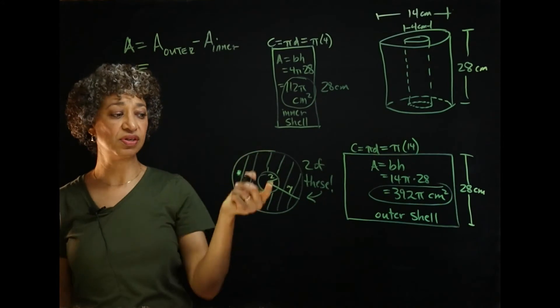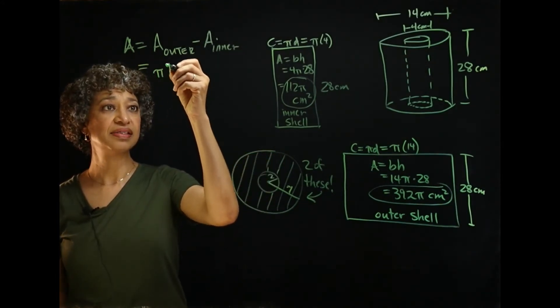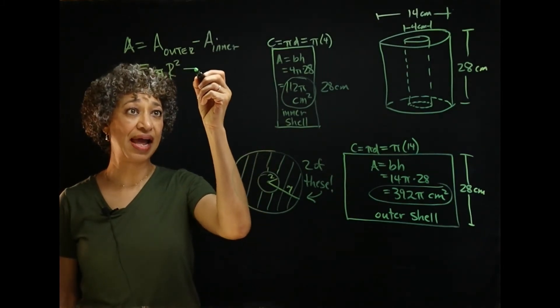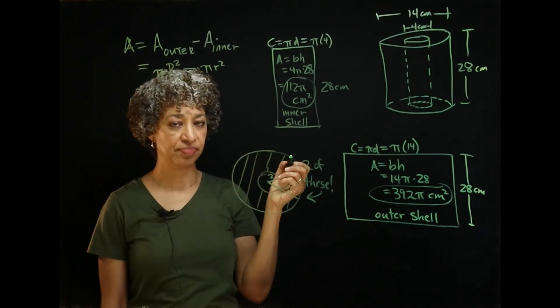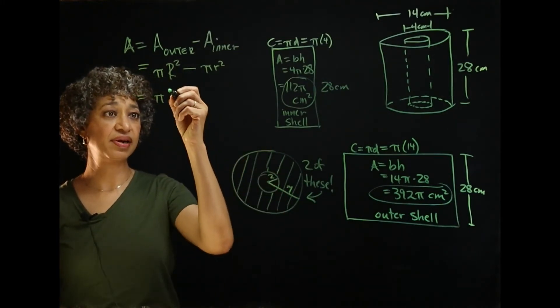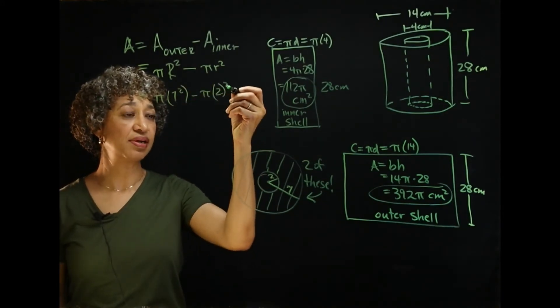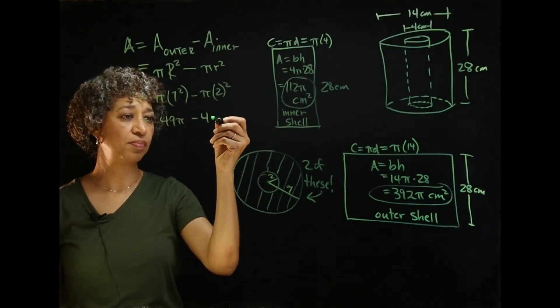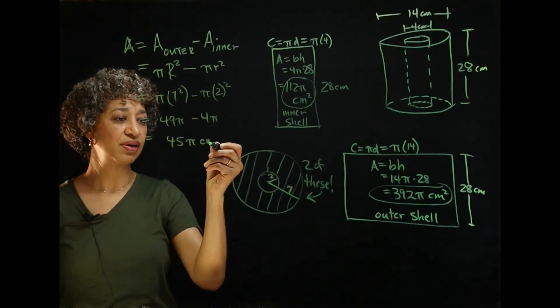So, they're both circles. So, the area of our big circle is pi times big R squared. Pi times the big radius squared. And we need to subtract pi times the little radius squared. So, then, that is pi times 7 squared minus pi times 2 squared. 49 pi minus 4 pi, which is 45 pi square centimeters.